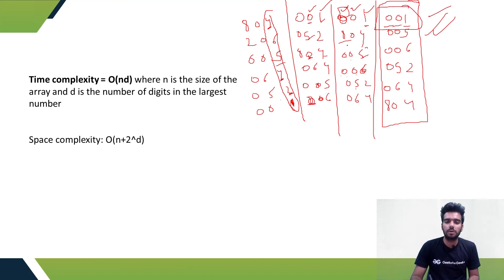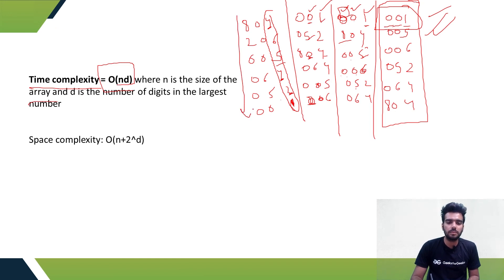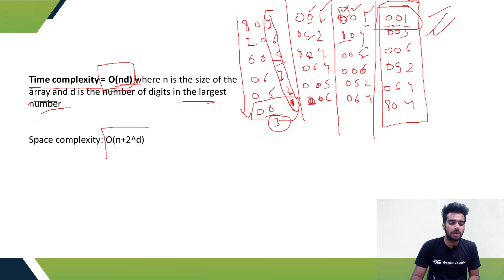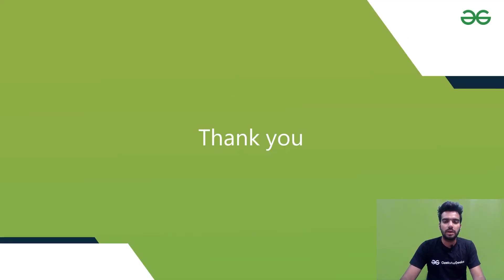The time complexity for radix sort is O(n·d), where n is the size of the array and d is the number of digits in the largest number. In our example, d is 3. The space complexity is O(n + 2^d). That's the time and space complexity for radix sort.